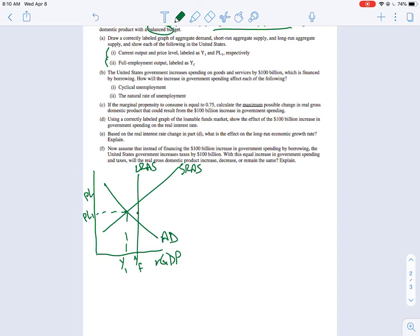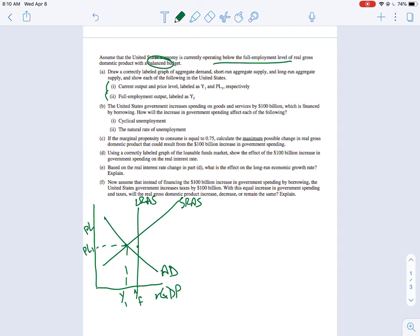All right, so the United States government increases spending on goods and services by $100 billion, which is financed by borrowing. So since we started off with a balanced budget, we know that we're going to be going into debt. But that's not really a part of this question. So this was A. For B, cyclical unemployment, B1.